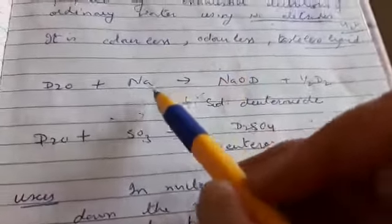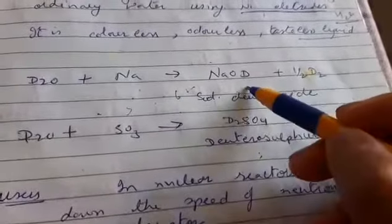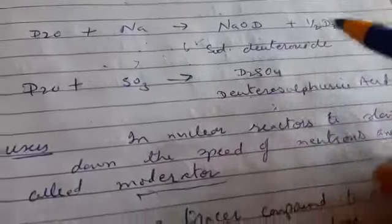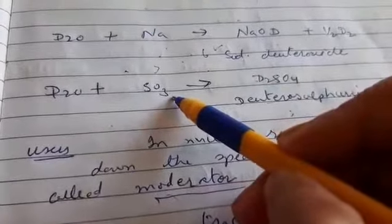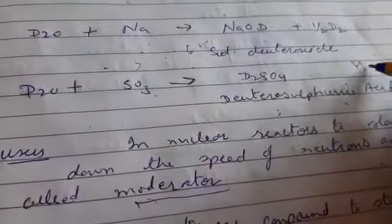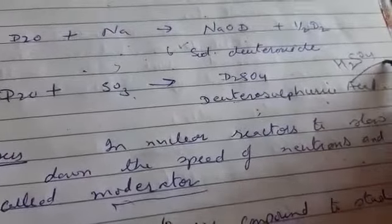D2O reacts with sodium to form sodium deuterium oxide, and half D2 is liberated. Similarly, if it reacts with sulfur trioxide, it forms deuterium sulfuric acid. Like ordinary water forms H2SO4 (sulfuric acid), it forms D2SO4 (deuterium sulfuric acid).